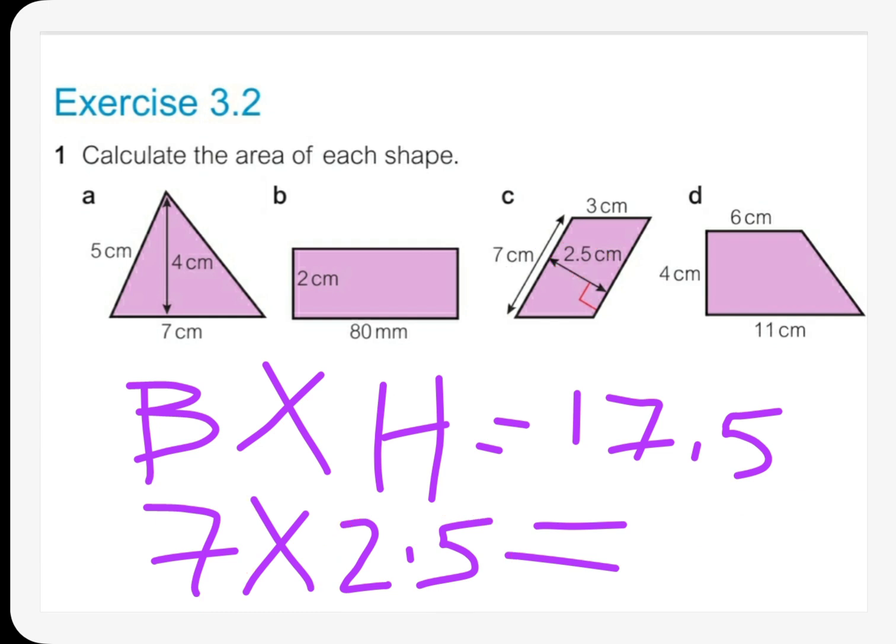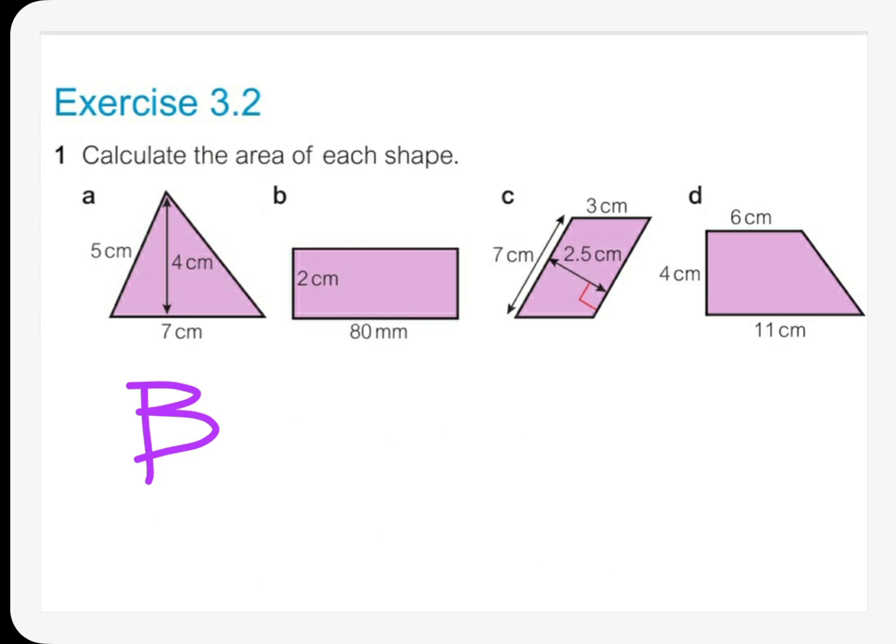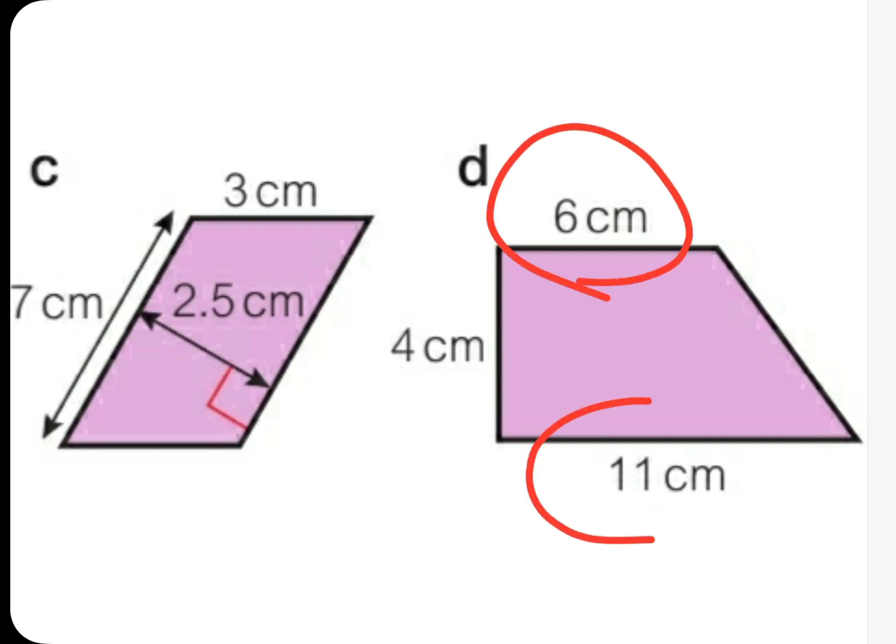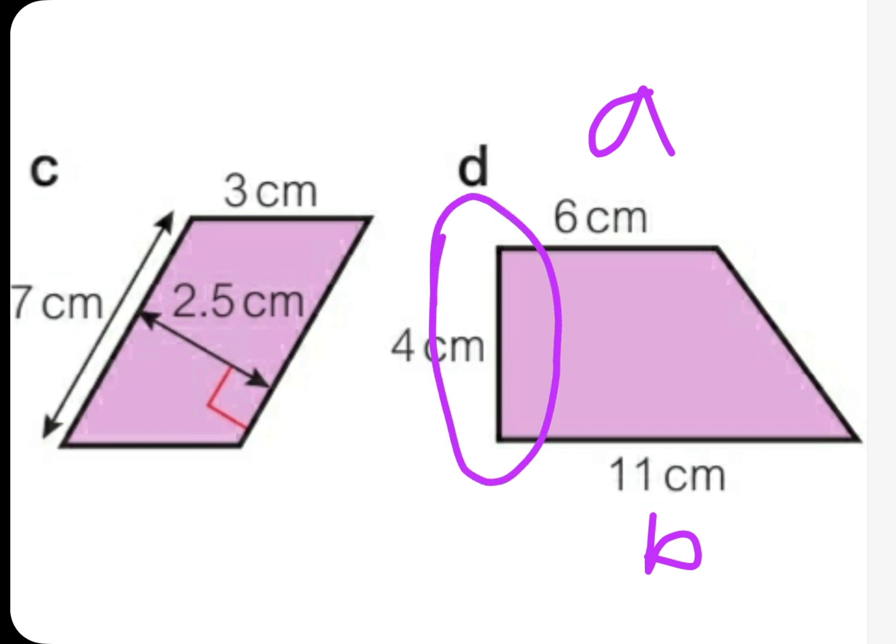In question D we have a trapezoid which has two bases. We have the short base and the long base. As we said, the short base we call A and the long base is called B.